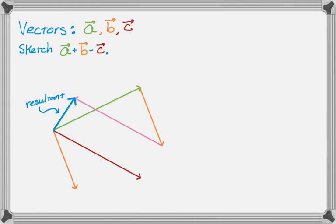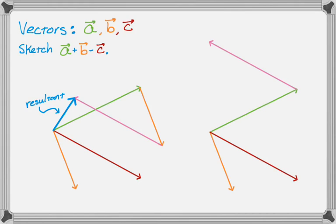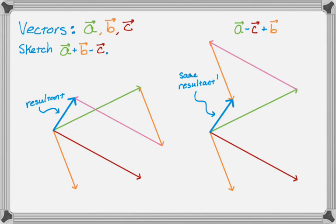What if you didn't like the order? You could start with a, then draw negative c first from the terminal point of a, and then from the terminal point of negative c draw vector b. You still go from initial initial to terminal terminal, and you get exactly the same resultant. So it actually doesn't matter what order you do these in — the result is always the same. Anyway, that's how you add and subtract vectors geometrically. I hope you found this helpful, and good luck.